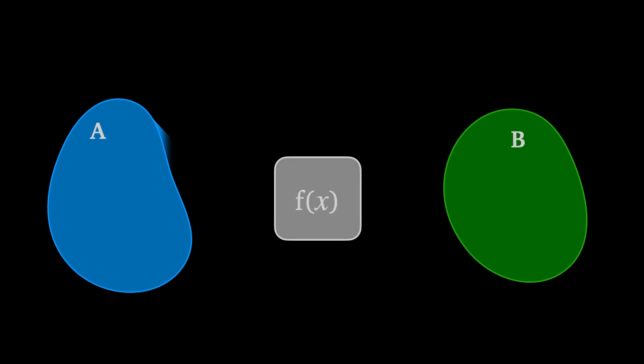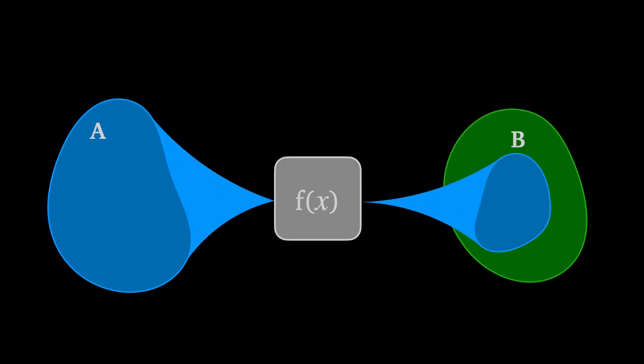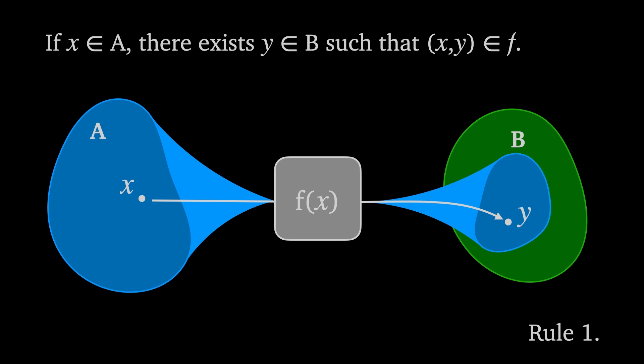A function from set a to set b maps a onto a subset of set b. We call a the domain of the function and b the co-domain. Rule one ensures that given any element x in a there is always a corresponding y in b such that x and y is in f. In everyday language that means the function must give a valid output for every value put into it.